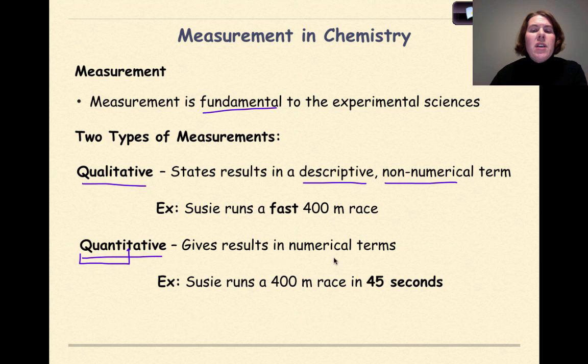These results are going to be in numerical terms. In other words, we're going to have numbers associated with these results. So as a contrast, we could say Susie runs a 400-meter race in 45 seconds. So we have a qualitative statement, which is more of a quality, which says that Susie's fast, comparing that to a quantitative statement, which tells us exactly how fast she ran that race.